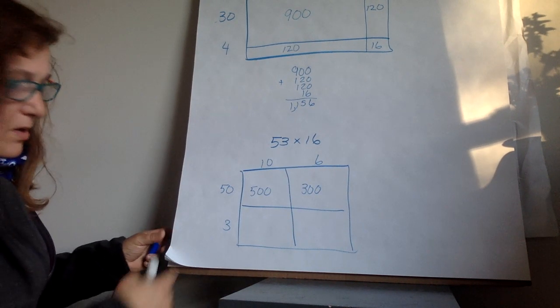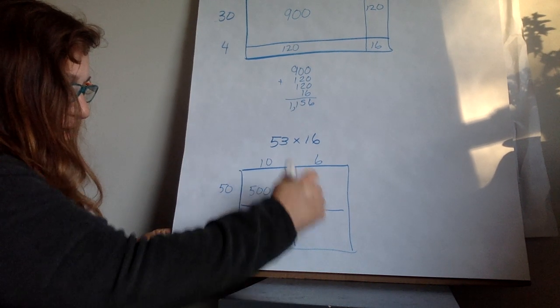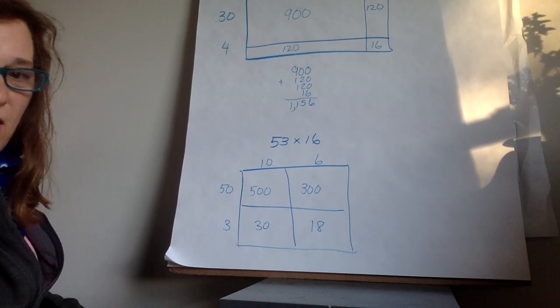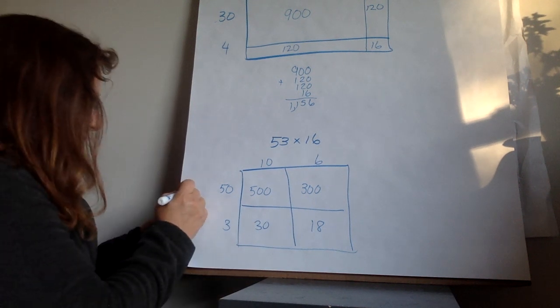3 times 10 is 30. 3 times 6 is 18. Now I have all my partial products. So I would add them together.